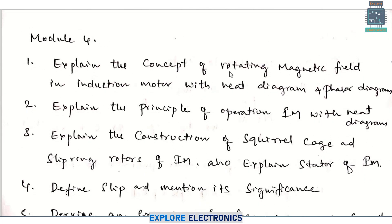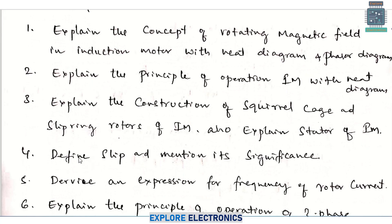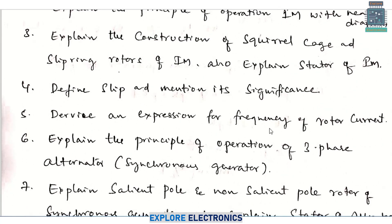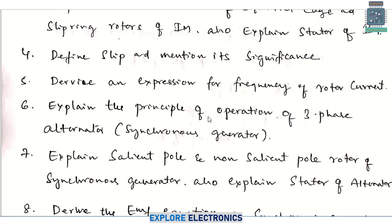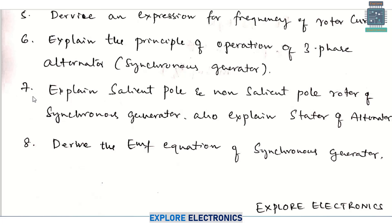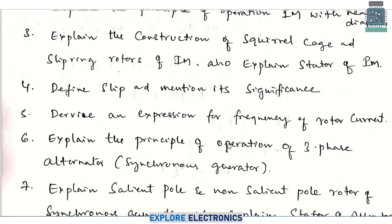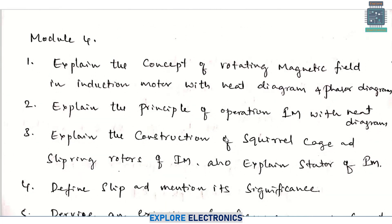Module 4: explain the concept of rotating magnetic field in induction motor with a neat diagram and phasor diagram. Explain the principle of operation of an induction motor. Explain the construction of squirrel cage and slip ring rotors of the induction motor, and also the stator. Define slip and mention its significance. Derive an expression for frequency of rotor current. Explain the principle of operation of a three-phase alternator — the synchronous generator — also asked previously. Explain salient pole and non-salient pole rotors of synchronous generator, explain the stator of the alternator, and the EMF equation derivation. These are the eight important questions in module 4.